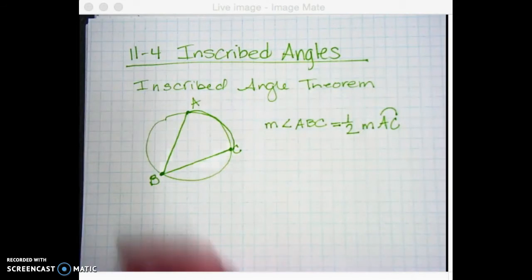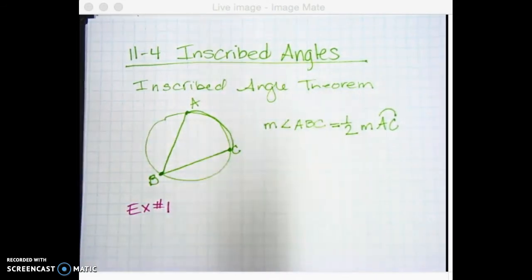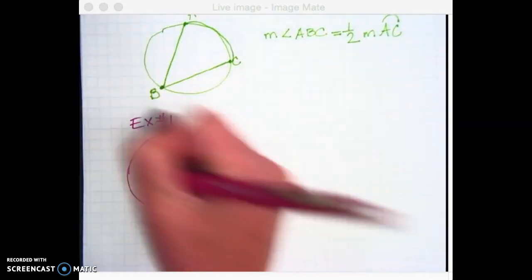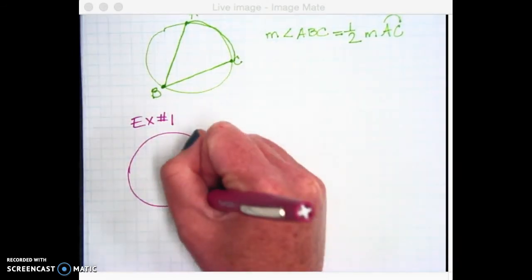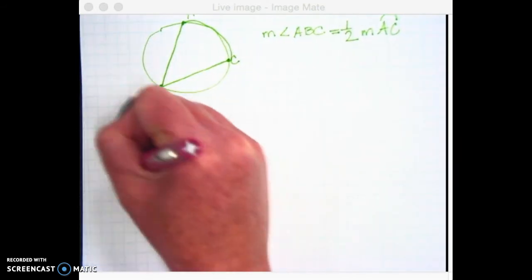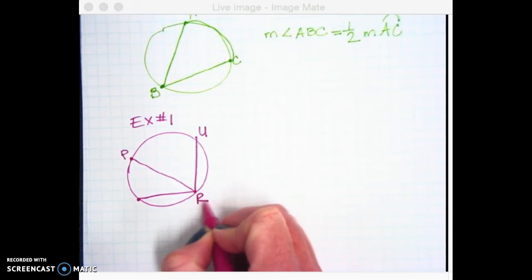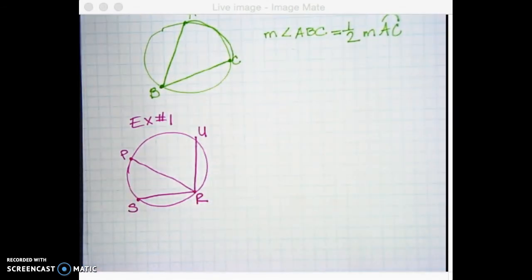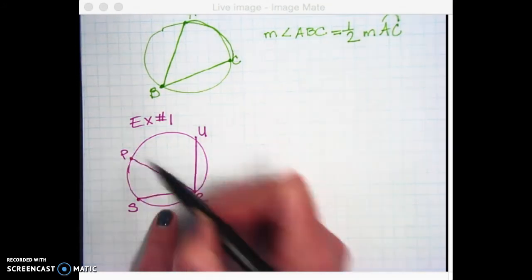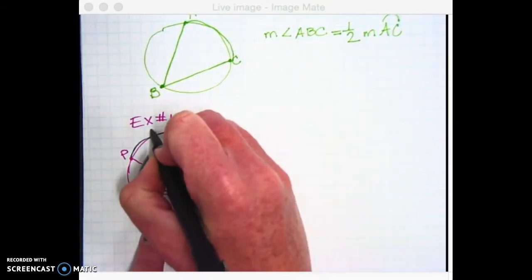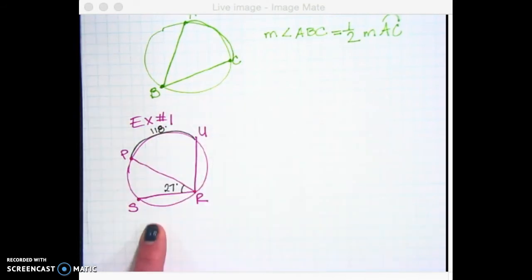So we're going to look at example 1 and 2. You only have to draw this once. Example 1 and 2 use the same drawing. So let me give you some measurements here. This angle right down in here, angle PRS, is going to be 27 degrees. And this arc from P to U is going to be 118 degrees.